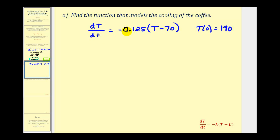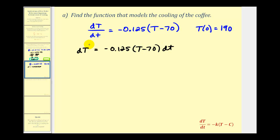For the first step, let's write this in differential form. We have d of big T is equal to negative 0.125 times the quantity T minus 70, dt. And because we want big T on the left side of this equation, we're going to multiply by the reciprocal of T minus 70, which would be 1 over T minus 70. So we have 1 over T minus 70 d big T is equal to negative 0.125 d little t.